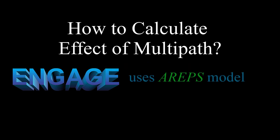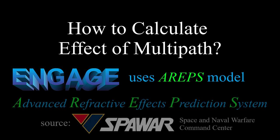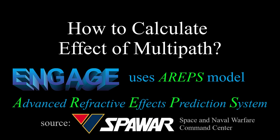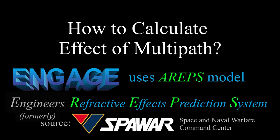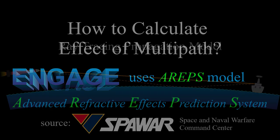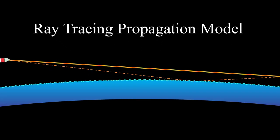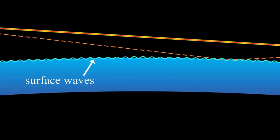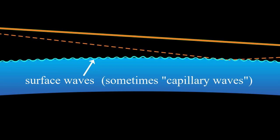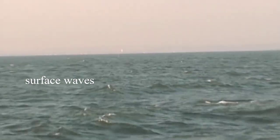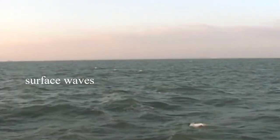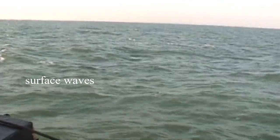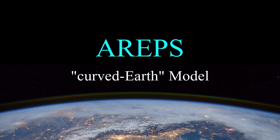ENGAGE uses the AREPS — Advanced Reflective Effects Prediction System — set of equations. It was formerly called the Engineer's Reflective Effects Prediction System, or EREPS, but was renamed AREPS a number of years ago. Basically it treats the Earth as a billiard ball roughened by surface waves, sometimes called capillary waves. The surface waves are the waves you see when you stand on the deck of a boat and look out at the water. The higher the wind, the bigger the surface waves, and the height of the waves is sometimes called the sea state. We'll call this a curved Earth model because the sea surface is part of a sphere.